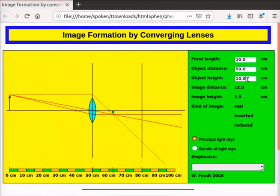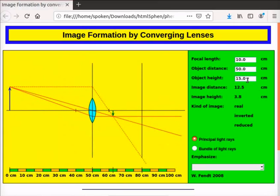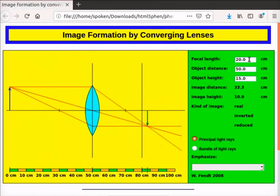Press F5 key on the keyboard to refresh the app. Now change the value of the object height to 15 cm. Change the focal length to 20 cm. Let us learn about the ray diagram.